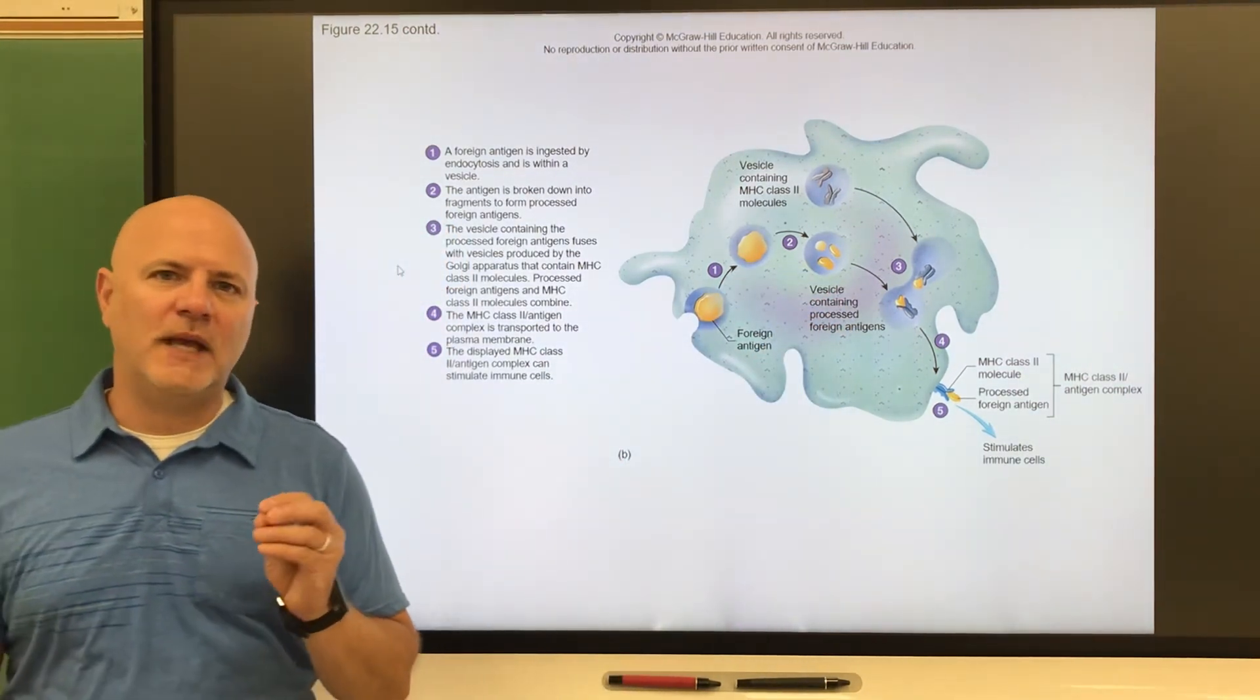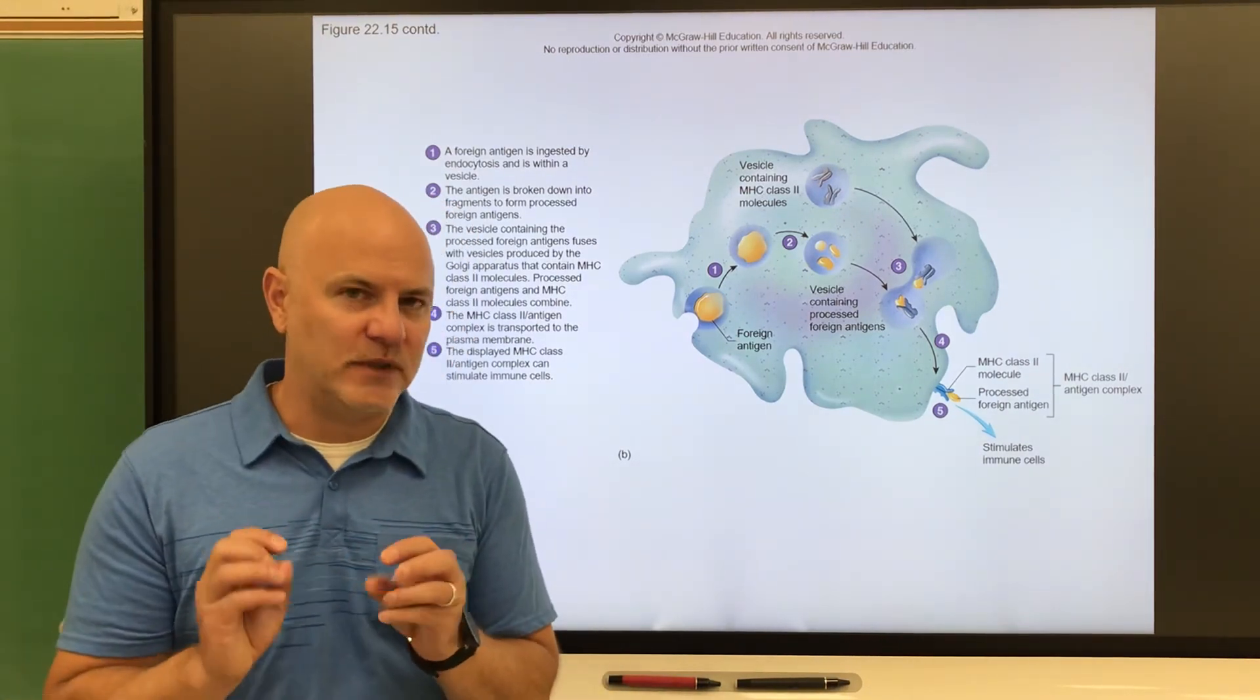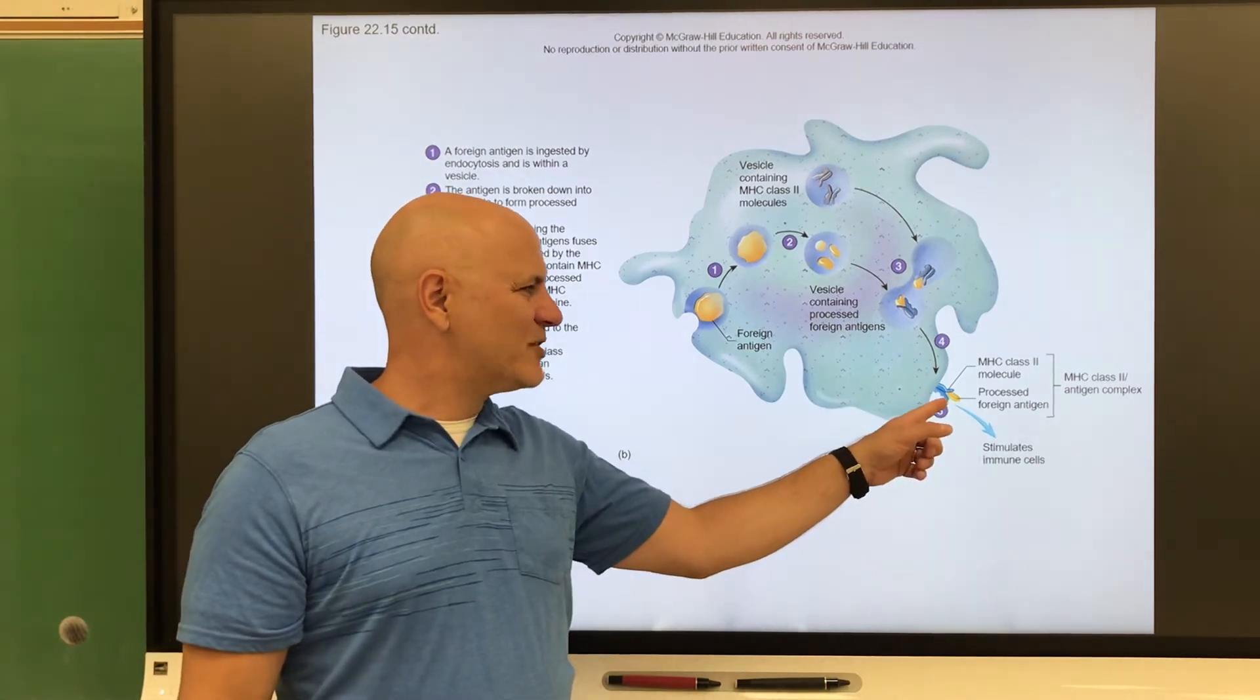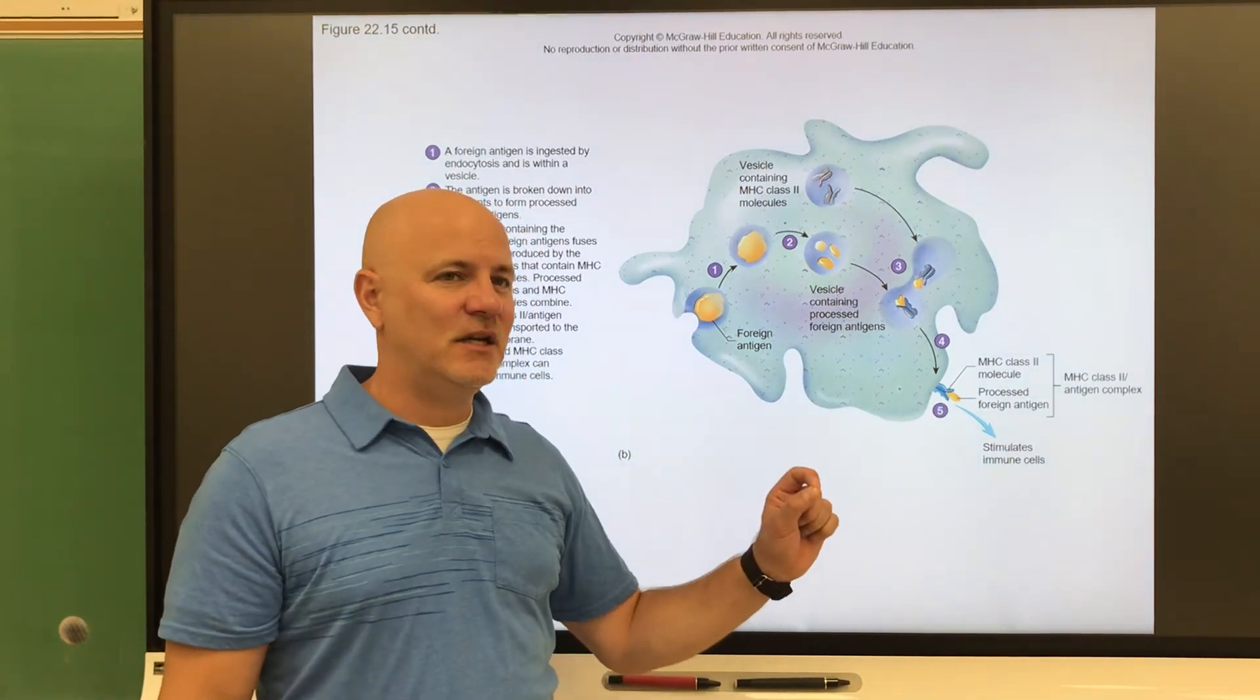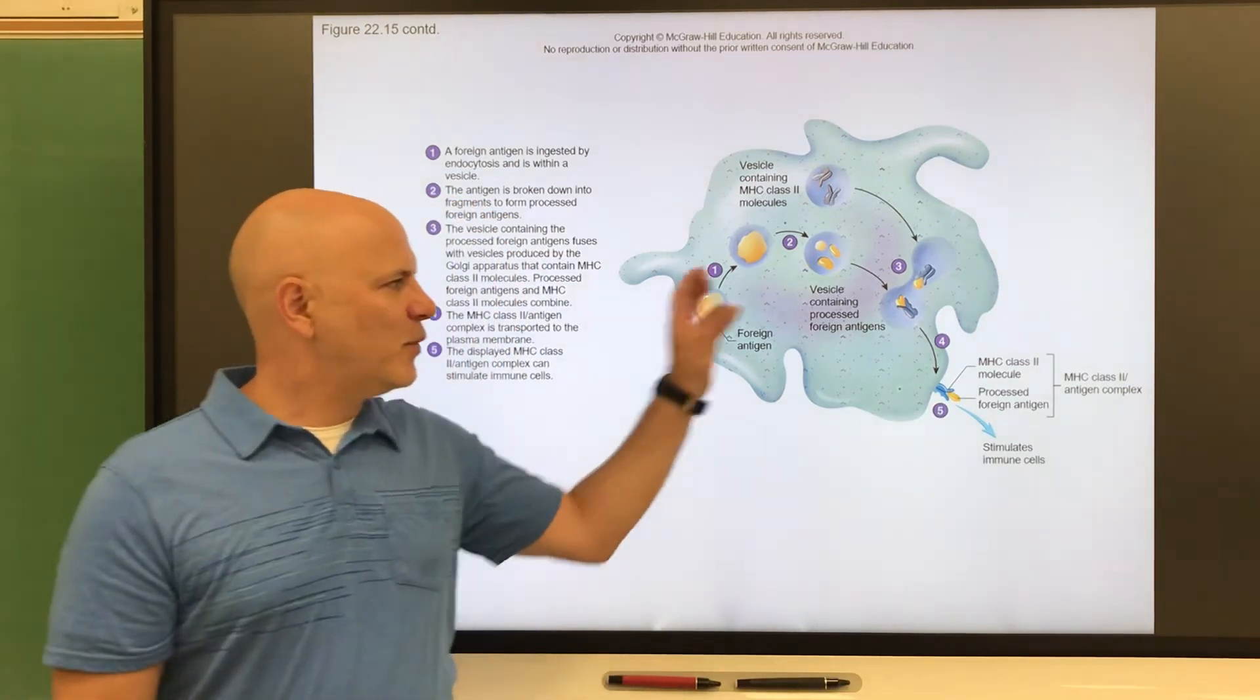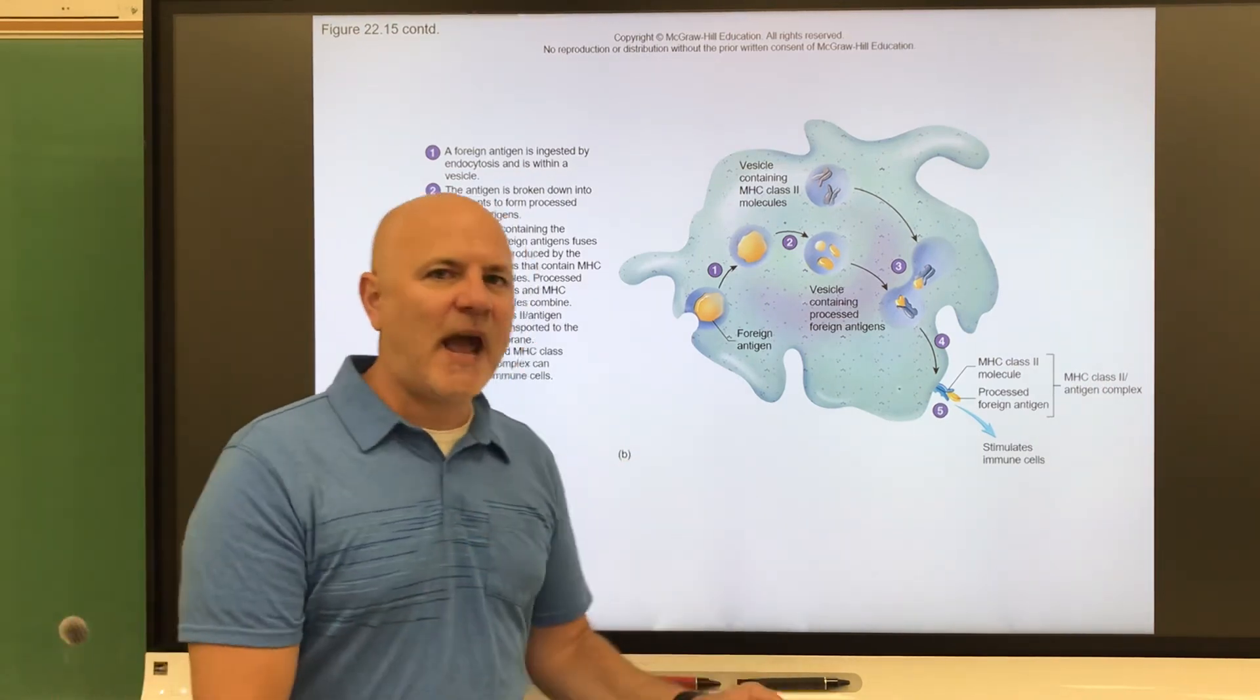One of the things that we do is we take that antigen. That's really what, once again, is keying our immune response, that antigen. What we do is we attach it to one of these MHC two proteins and we attach it to our cell surface because what this guy is going to do, he's going to encounter other white blood cells.